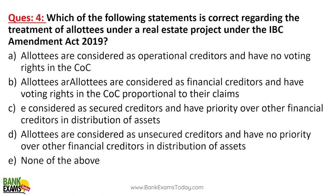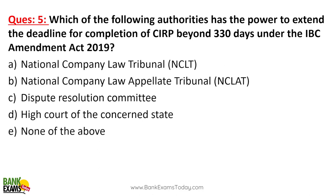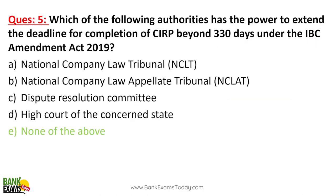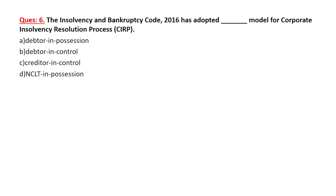There is a difference between CIRP and PPIRP — that is really, really important. Allottees under real estate projects are considered as financial creditors. Which authority has the power to extend the deadline for completion of CIRP beyond 330 days? None of the listed options — according to IBC, the deadline for CIRP is 330 days including any extension, and only the Supreme Court of India can extend it under Article 142 of the Indian Constitution. No High Court, no NCLT, no NCLAT can extend it.